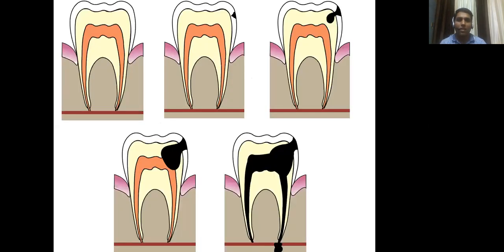In the diagram, we can see how the caries spread to the enamel, then dentin, and subsequently spread up to the root of the tooth.